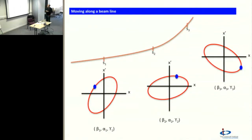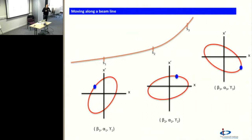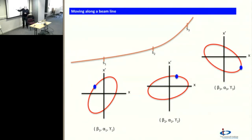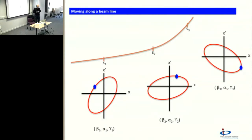What happens moving along a beamline? We have a beamline going from left to right — three positions s1, s2, s3. s1 has lattice functions alpha, beta, gamma depending on the lattice; s2 has lattice functions; s3 has lattice functions. At each point the ellipse has a different orientation and shape. But for a given particle — the blue particle — it has an emittance setting its ellipse area. At position s1 the particle is at a certain point on its ellipse with a certain orientation. Moving to s2, the ellipse looks different because alpha, beta, gamma are different — the particle has moved to a different point on the ellipse — but the area is the same. The particle moves through the accelerator going around this ellipse. This really is the central point of the Courant-Snyder formalism.